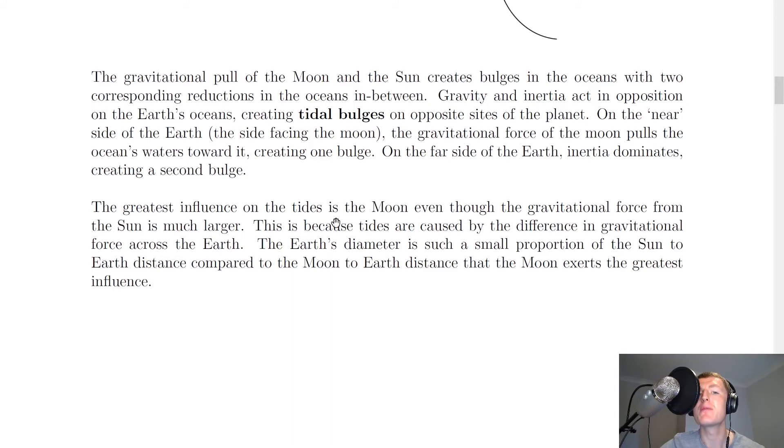It goes on to say that the greatest influence on the tides is the Moon, even though the gravitational force from the Sun is much larger. This is because tides are caused by the difference in gravitational force across the Earth. The Earth diameter is such a small proportion of the Sun-to-Earth distance compared to the Moon-to-Earth distance that the Moon exerts the greatest influence.